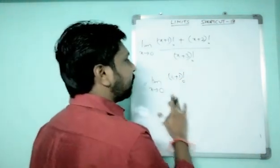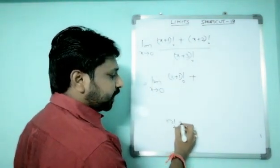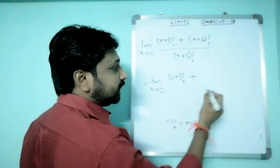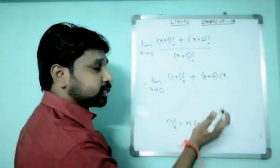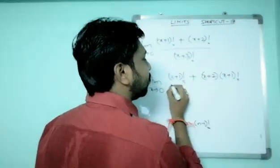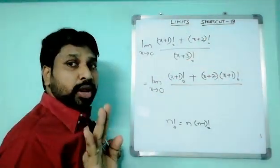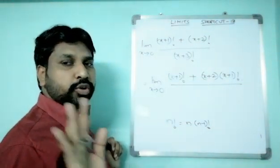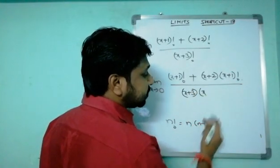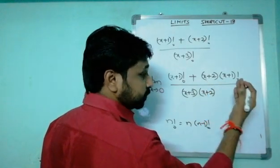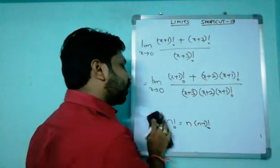Since (x+1)! is the least, we convert all higher factorials down to it. Using n! = n × (n-1)!, we write (x+2)! = (x+2) × (x+1)!. Similarly, (x+3)! = (x+3) × (x+2) × (x+1)!. So the expression becomes: [(x+1)! + (x+2)(x+1)!] / [(x+3)(x+2)(x+1)!].